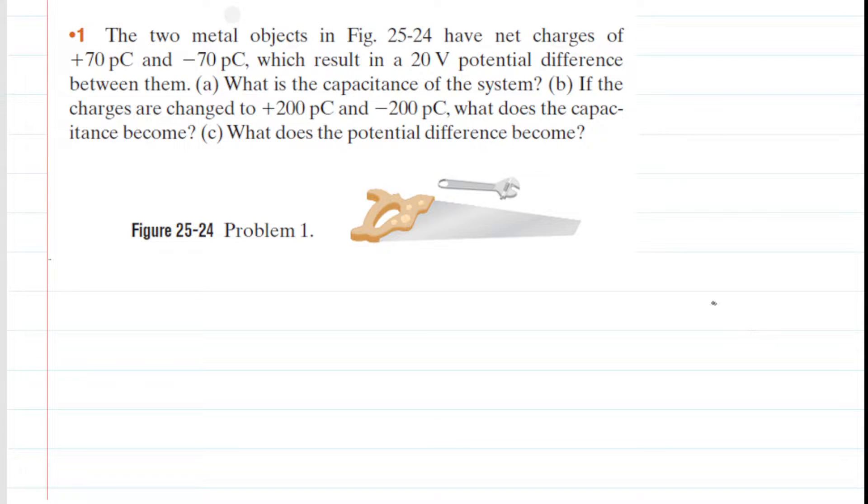In this question we have two metal objects. One of the objects has a net charge of 70 picocoulombs, the other object has a net charge of negative 70 picocoulombs, and because of this charge separation we're going to get a potential difference between the two objects. We call that potential difference V, which is given in the problem as 20 volts.